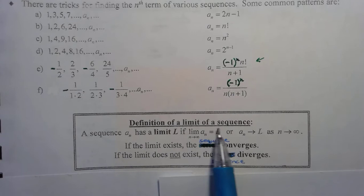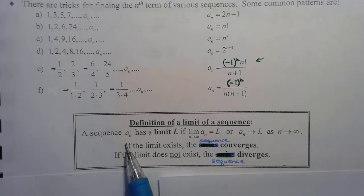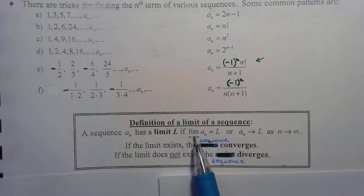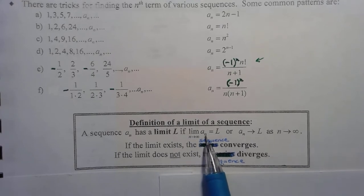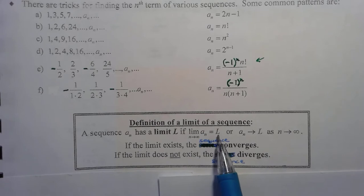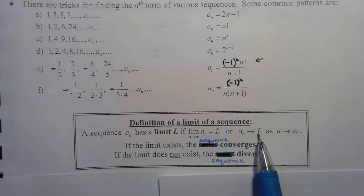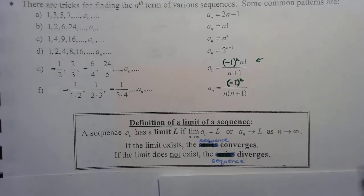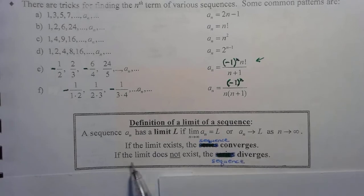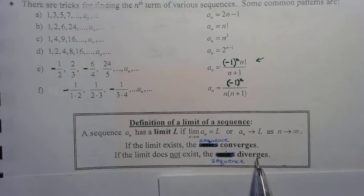The definition of a limit of a sequence: a sequence A sub n has a limit L if the limit as n goes to infinity of our sequence approaches some value L — or if A sub n approaches L as n goes to infinity. If the limit exists, the sequence converges. If the limit does not exist, the sequence diverges.